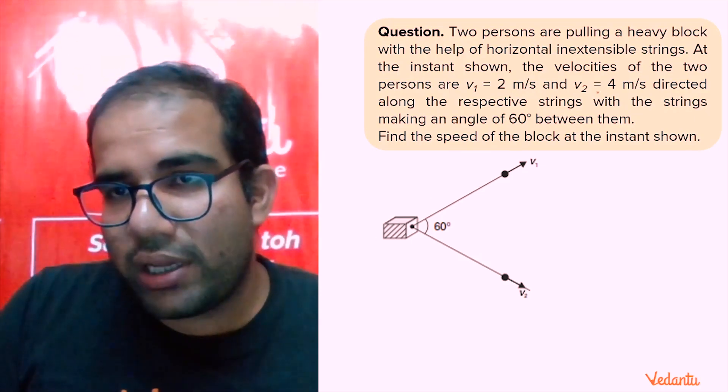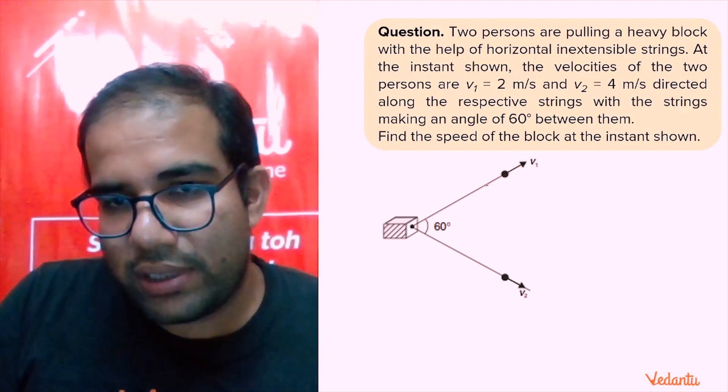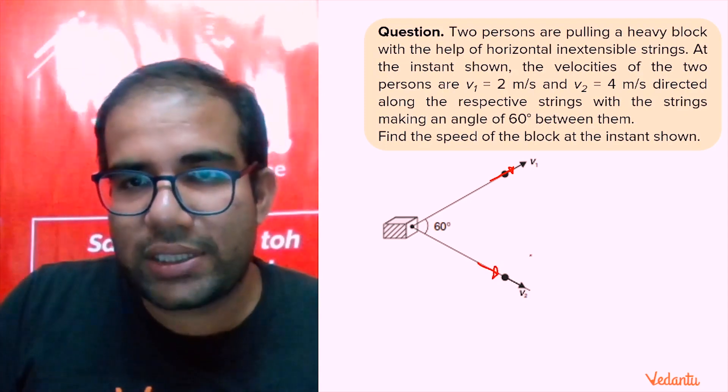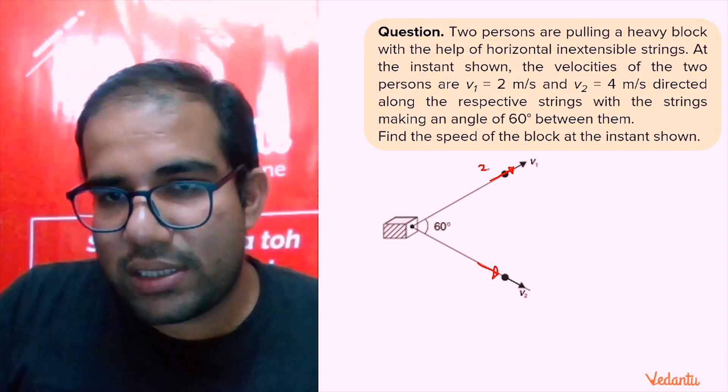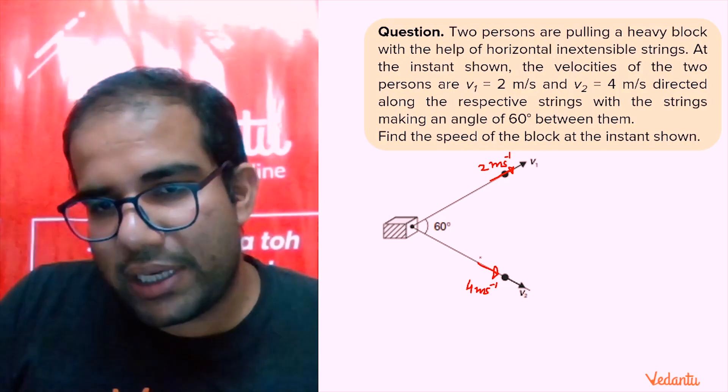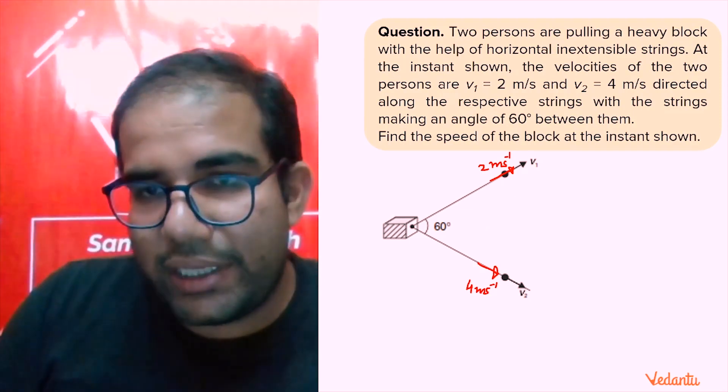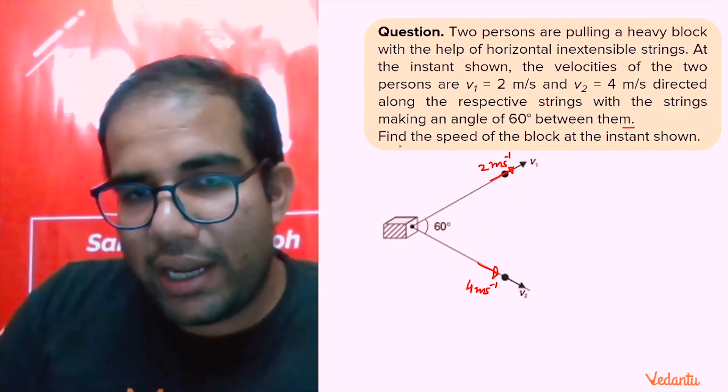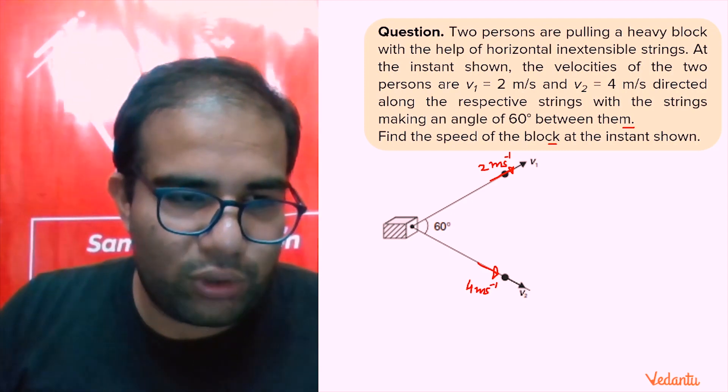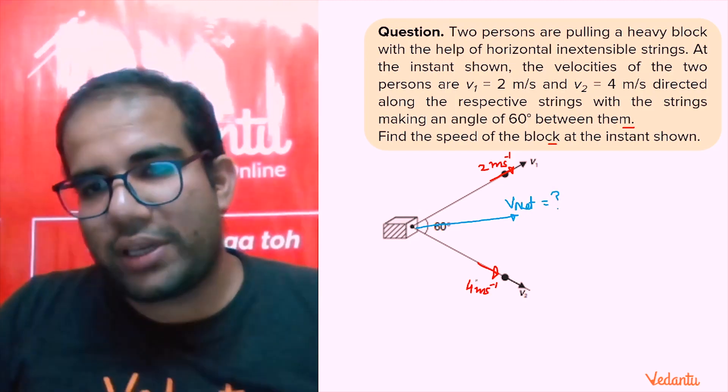Let's start today's questions. They are very good and you will enjoy them a lot because I chose them specifically. I was getting this feeling from many good students that they are doing lots of mistakes in these kinds of questions. There are two persons pulling a heavy block with the help of horizontal inextensible strings. One person is pulling this string and the second is pulling that string.